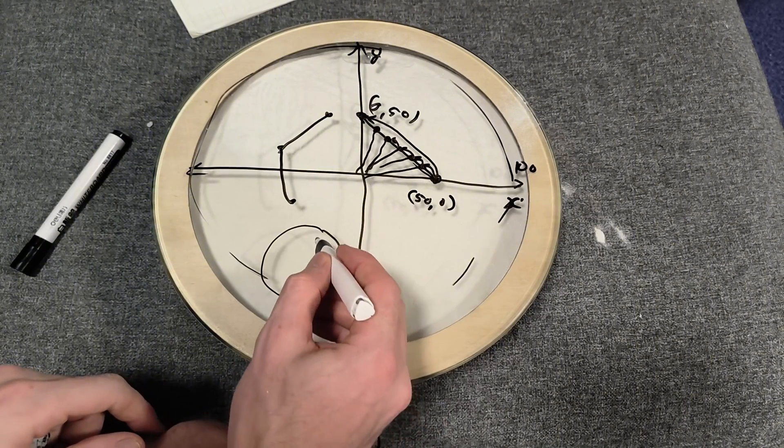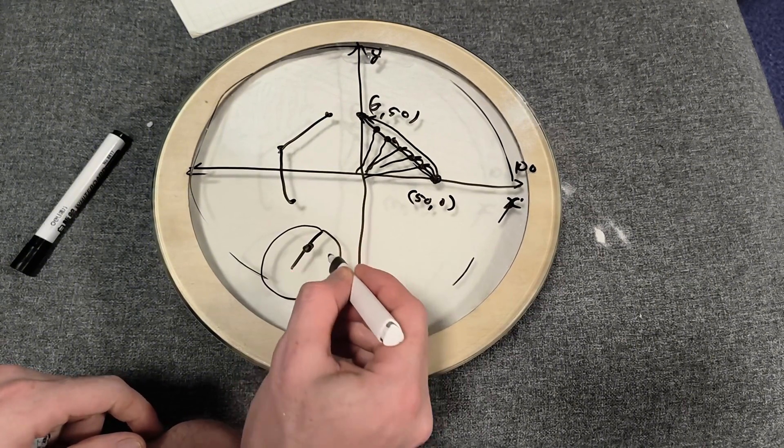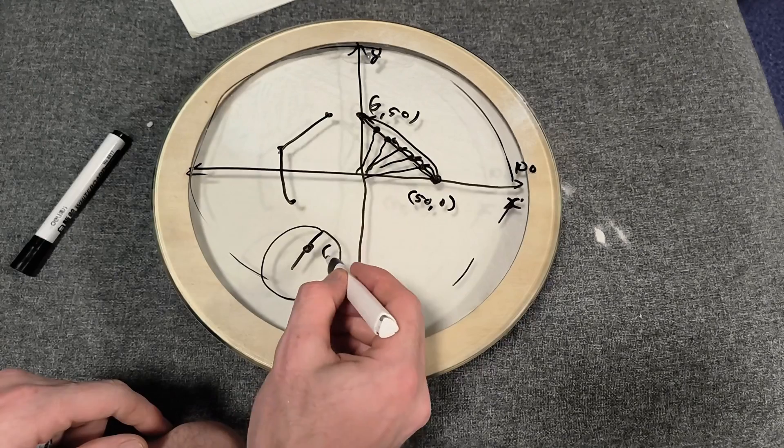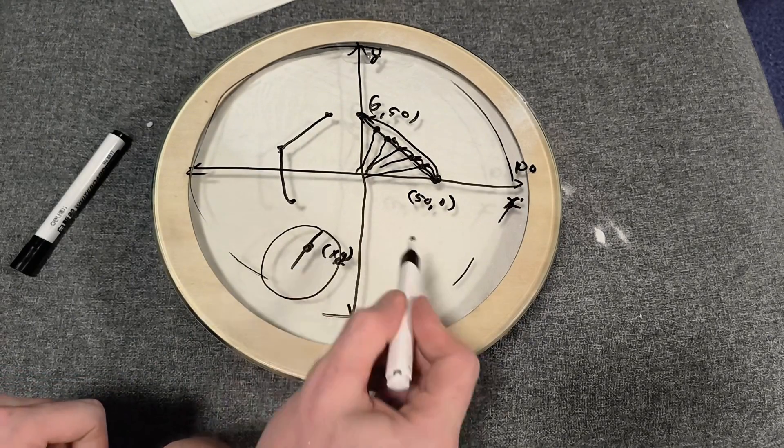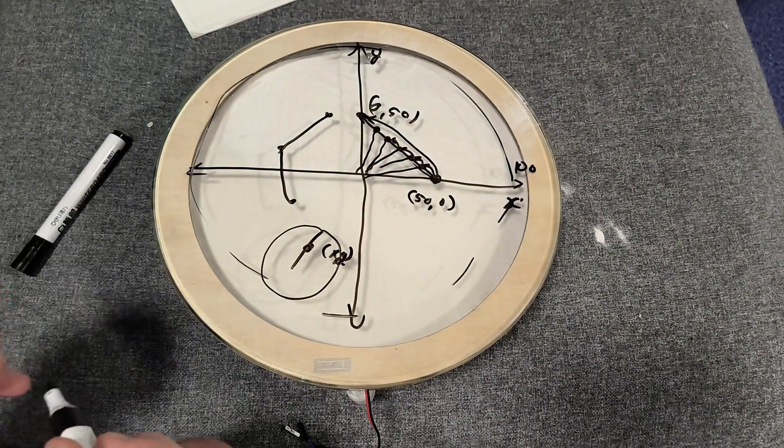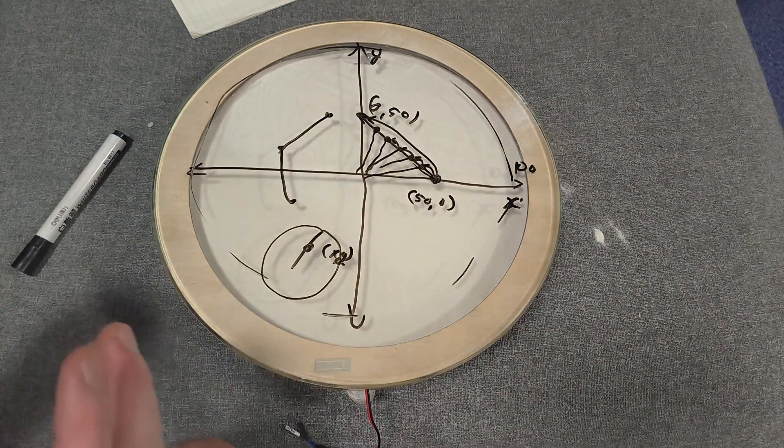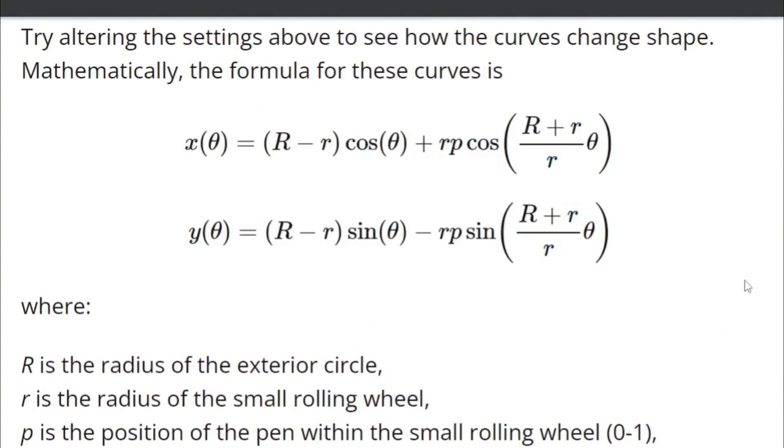But what about the spirograph? A spirograph is basically two gears. We don't have two gears, so how are we going to make this into a spirograph machine? It would make beautiful patterns as it's spinning around.